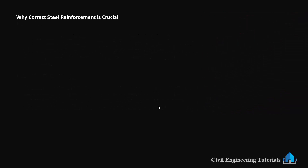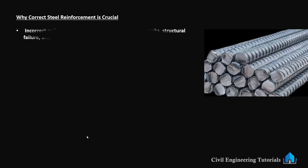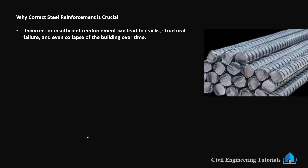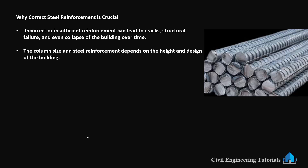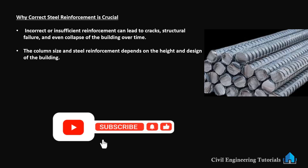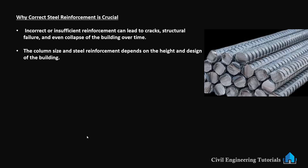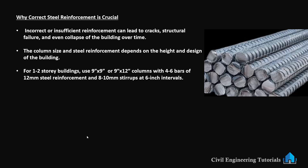Why is correct steel reinforcement crucial? Many people tend to overlook the importance of steel reinforcement in columns, but it's essential. Incorrect or insufficient reinforcement can lead to cracks, structural failure, and even collapse of the building over time. It's always important to follow the recommended guidelines and get your design approved by a professional structural engineer. For 1 to 2 storey buildings, use 9 inch by 9 inch or 9 inch by 12 inch columns with 4 to 6 bars of 12 mm steel reinforcement and 8 to 10 mm stirrups at 6 inch intervals.